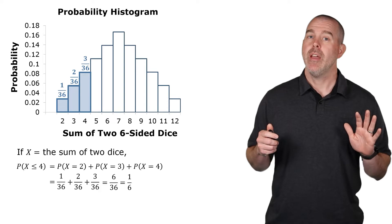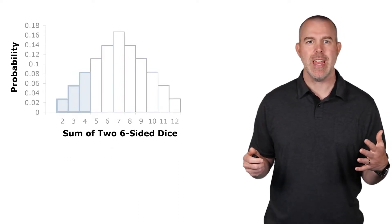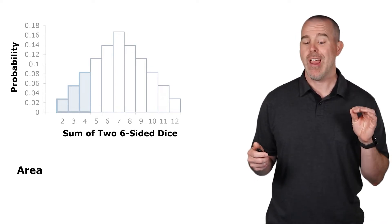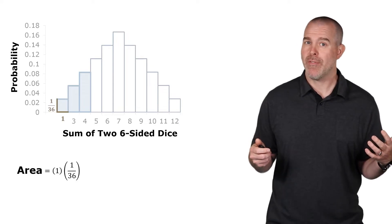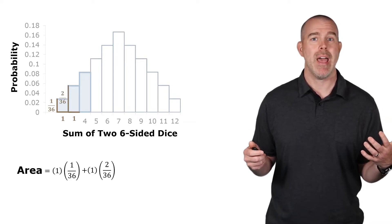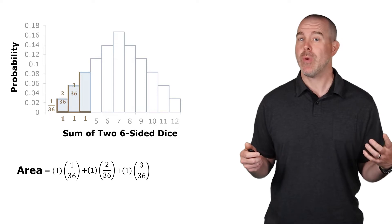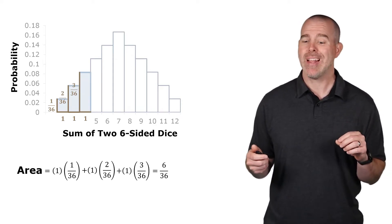Now we're going to dive a little bit deeper and look at this a little bit differently, and instead of just adding the probabilities, what if we focus on the areas? So add up that first area, that first rectangle, it's 1 by 36. Second one is 1 by 2/36, and the third one is 1 by 3/36.